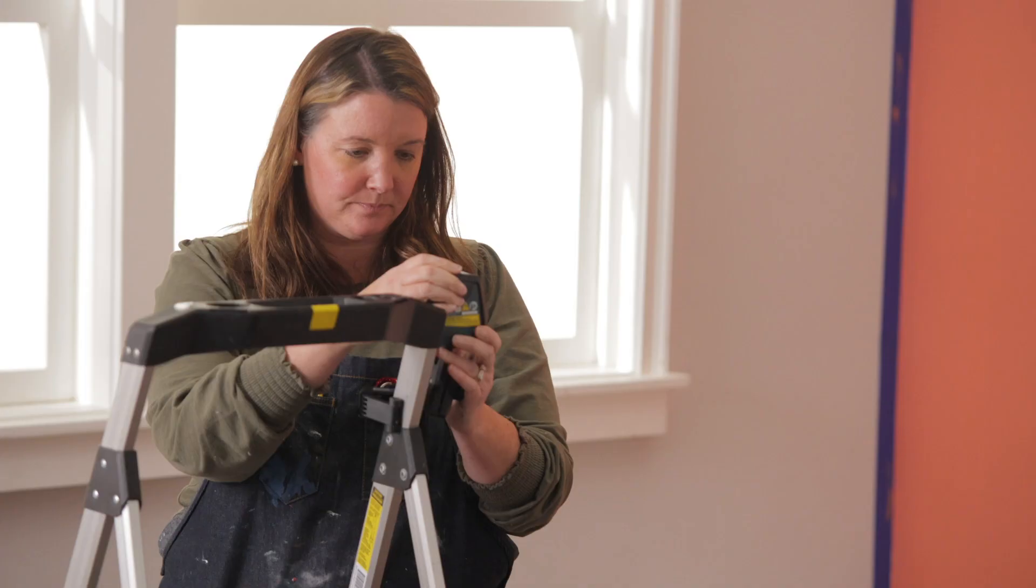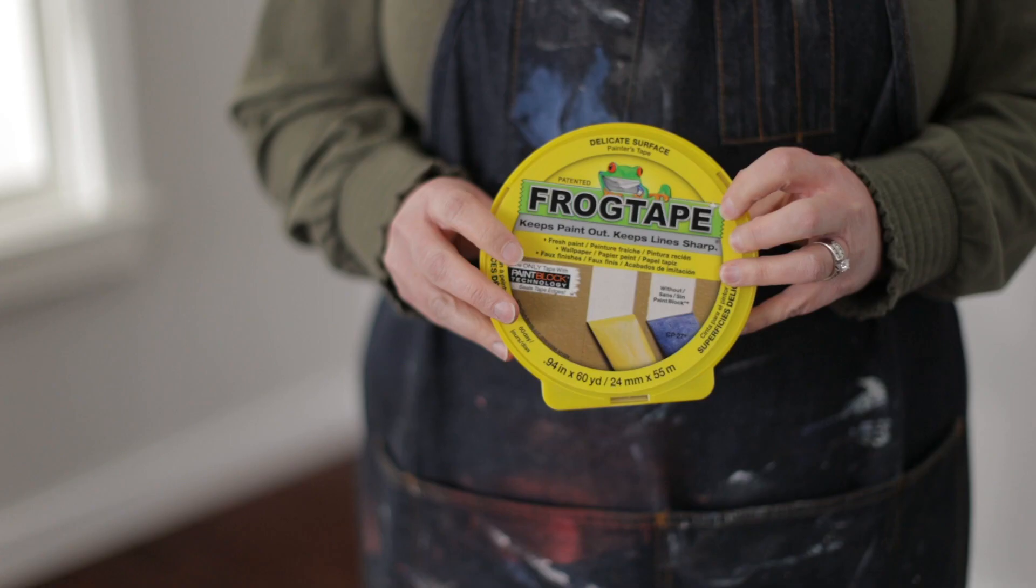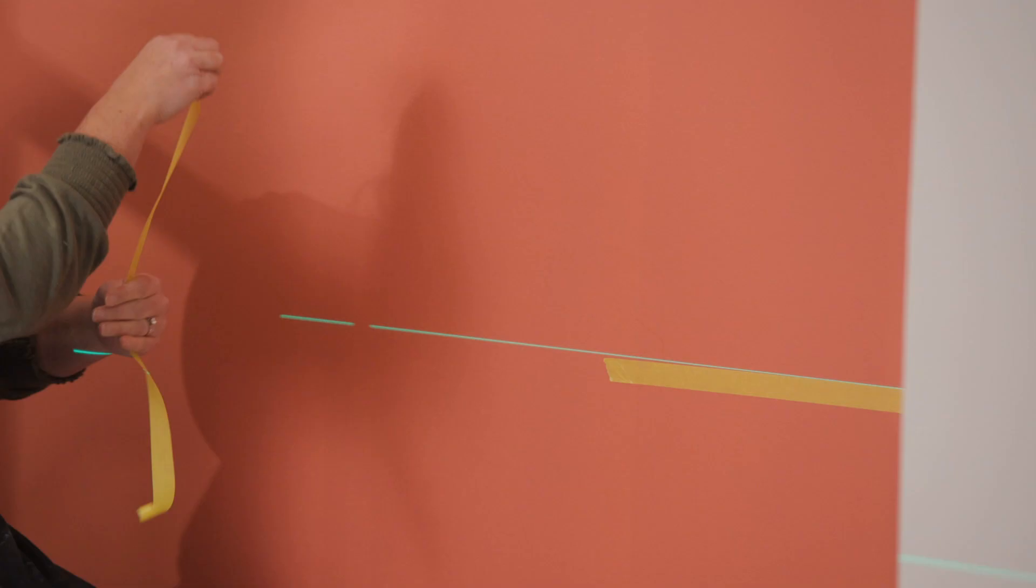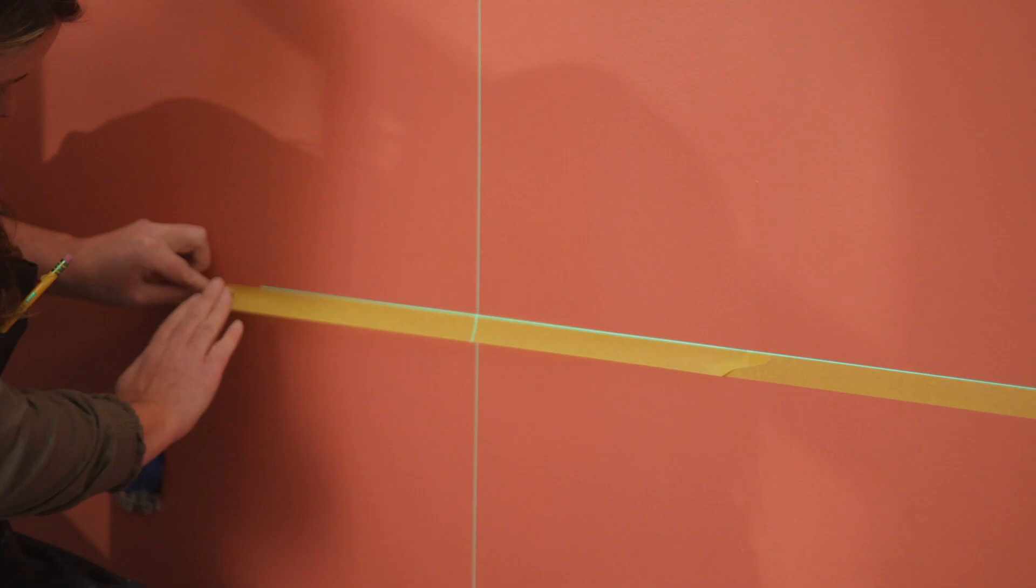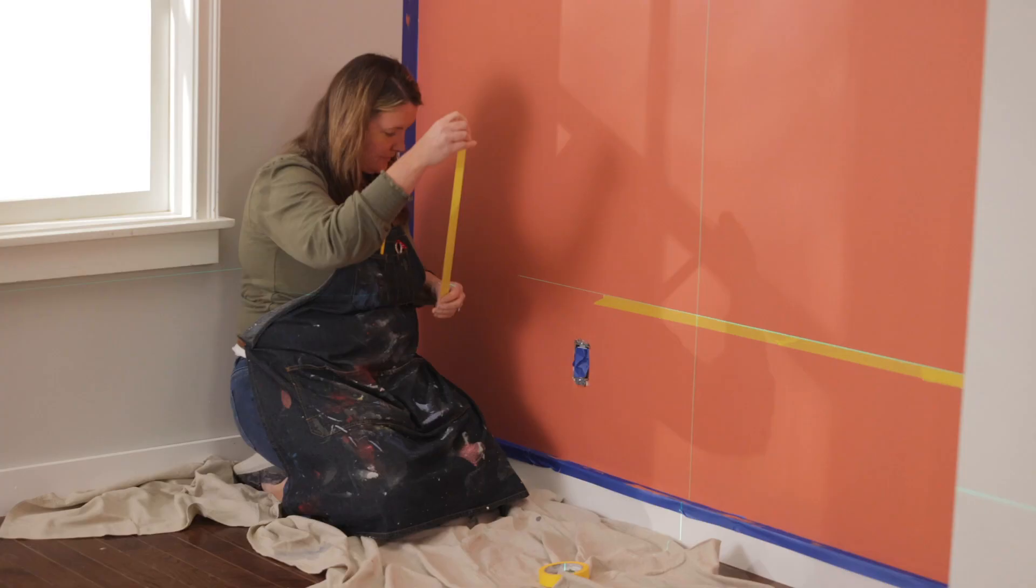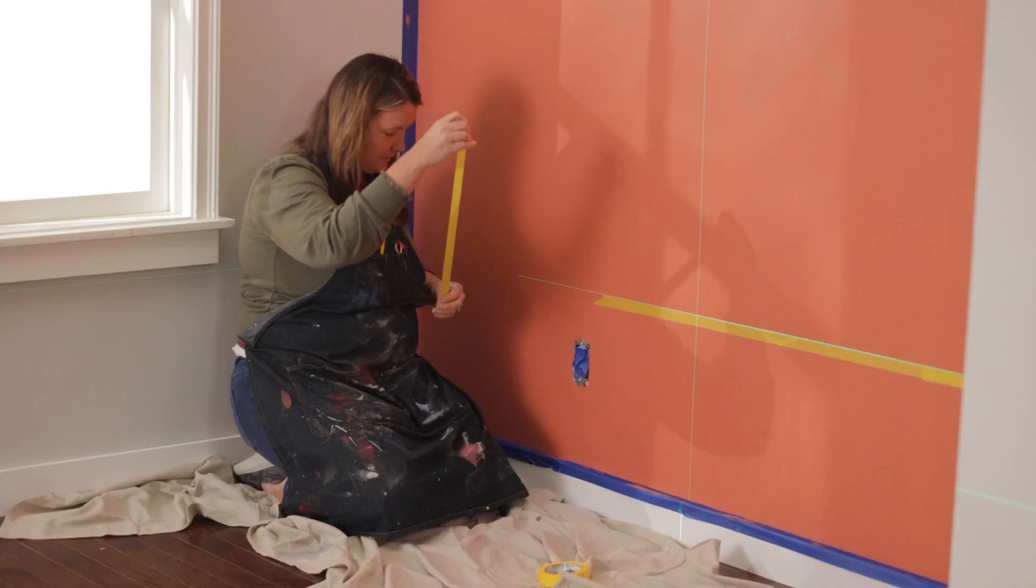This self-leveling Bosch laser is so slick and easy to use. You can create straight lines in seconds. I'm using frog tapes yellow delicate tape so it doesn't remove the paint underneath. Start at the bottom of the wall and measure your first stripe and use that line to apply the painters tape along the beam. The beam will show you exactly where to place that next stripe.